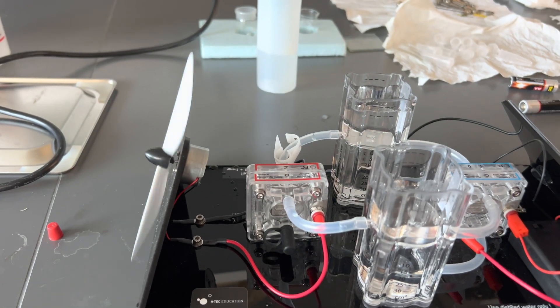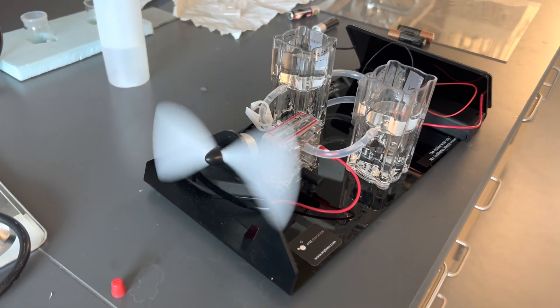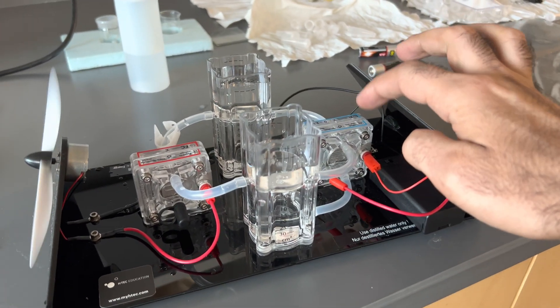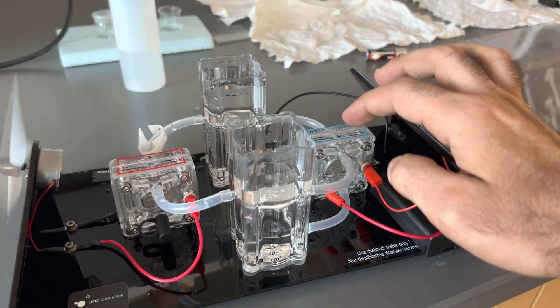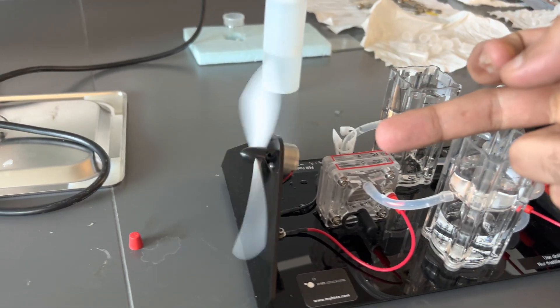Let me show you by running the fan. So here in this section what you can see is that initially we are breaking water into its individual components, hydrogen and oxygen, and using a fuel cell we are joining it back to run the fan.